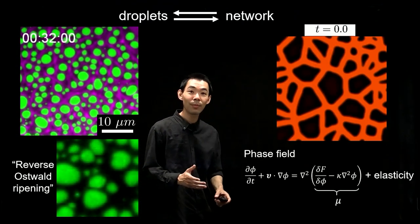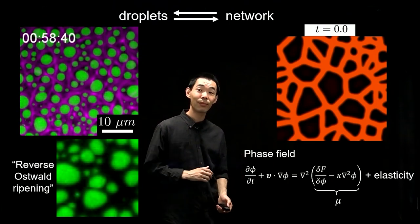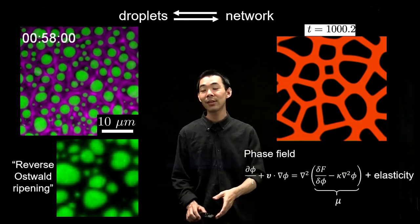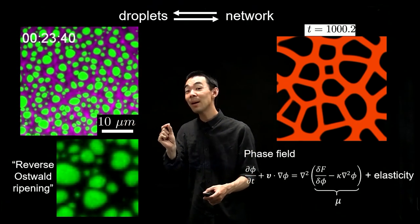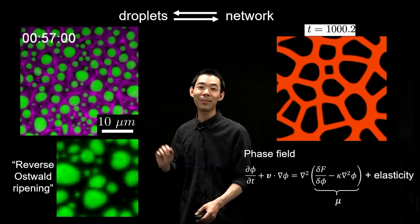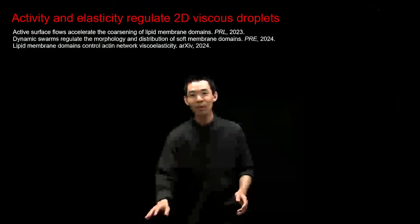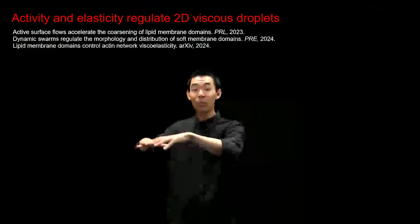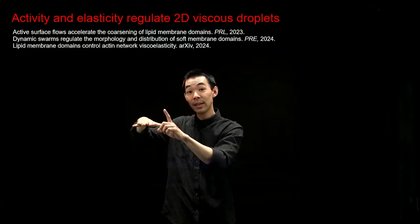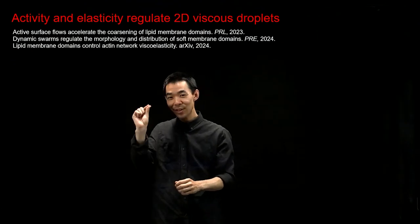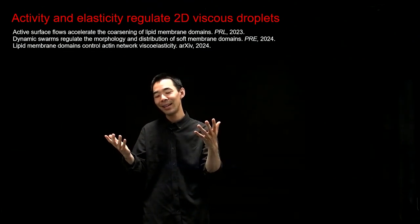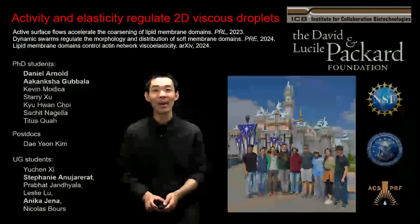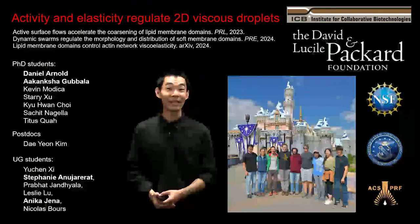We are developing a phase field model with elasticity to reproduce these effects. When you add elasticity, you can get very non-circular cusps and corners to form — the first indication of success in modeling the sharp corners, cusps, and non-circular shapes observed in experiments. In conclusion, we are working on this devilishly complicated cell membrane surface, and I think we are just scratching the surface in understanding how viscous droplets behave and respond to activity and elastic forces. I'd like to thank the researchers in my lab, especially Daniel and Akanksha for leading this project. Thank you.